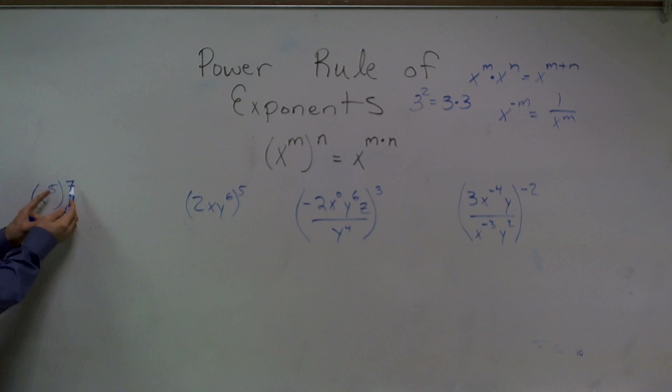Remember, when I have a number raised to another exponent, I multiply across. So this can be written as a to the 5 times 7, which is a to the 35th.